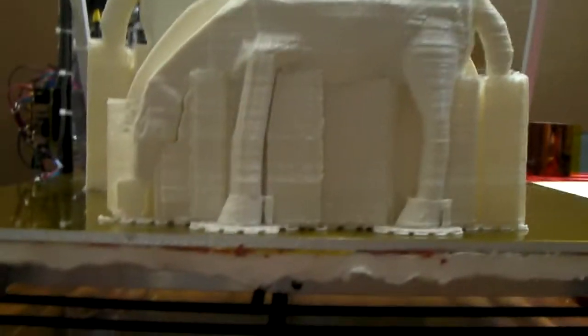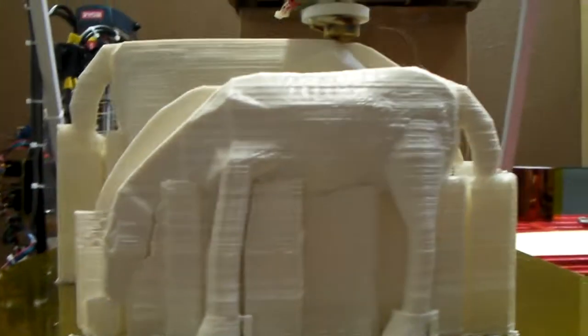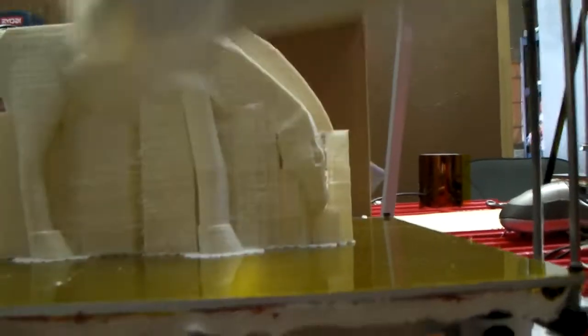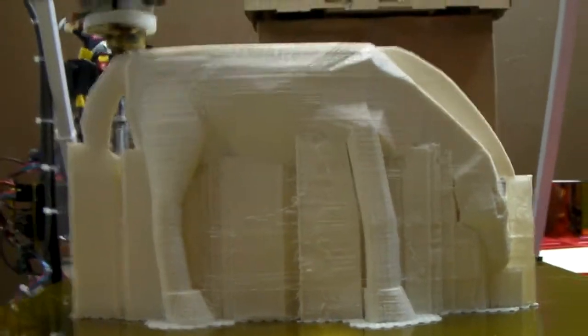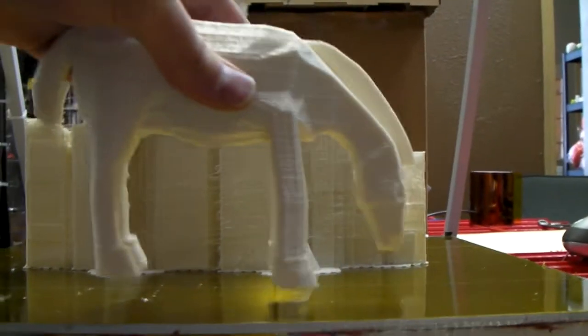And this is the horse where it has support material still attached. So that will be the same for this one. Once the support material is removed, should have a horse that looks similar.